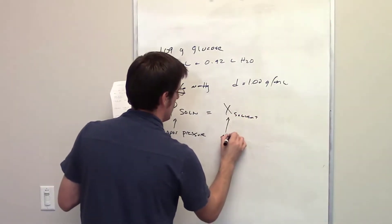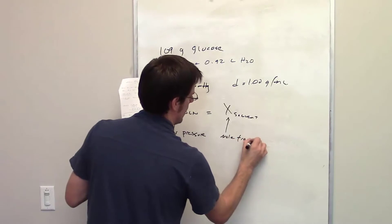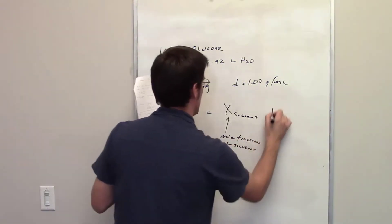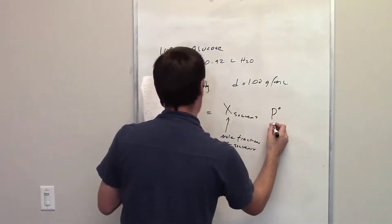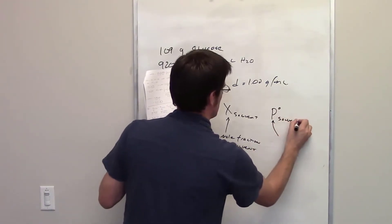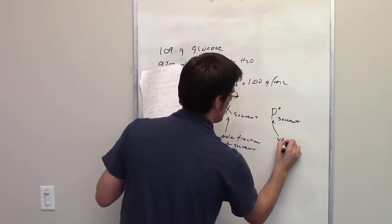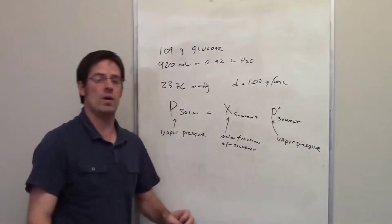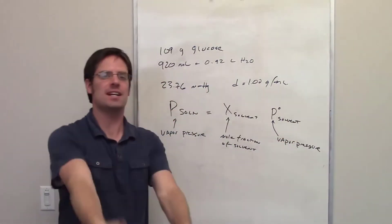This is mole fraction of the solvent multiplied by the vapor pressure of pure solvent. This would be the vapor pressure of what the solvent would be if there was nothing dissolved in it.